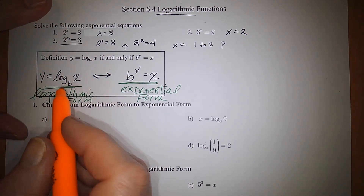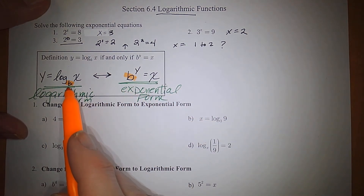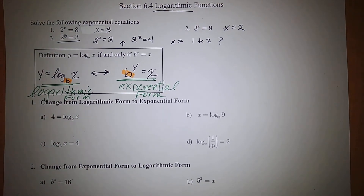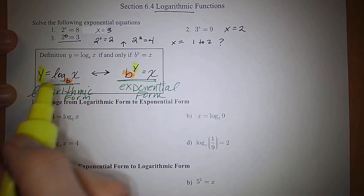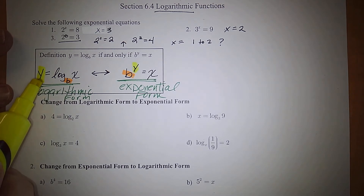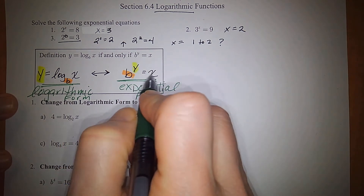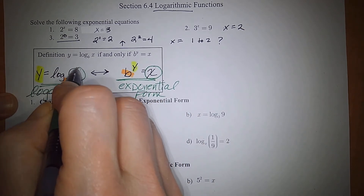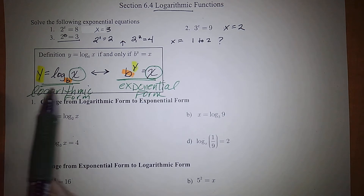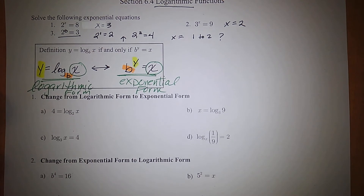Let's go through the parts in order to go back and forth between the two forms. The base of the exponential form becomes the base of the log. The exponent of the base becomes the left-hand side of the logarithm — what we're trying to solve for. The value is the answer you get when you raise the base to the exponent, and that becomes the argument of the logarithm.